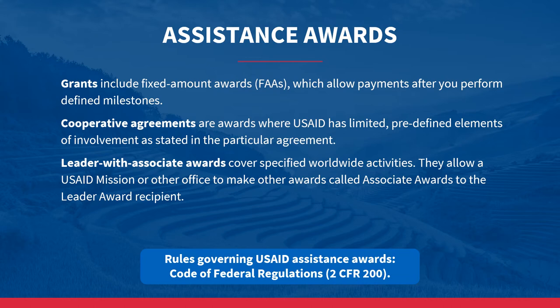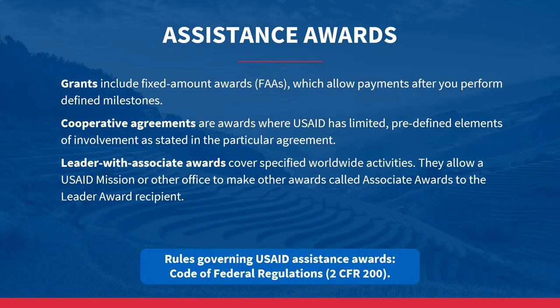According to USAID's Automated Directive System, or ADS, a leader with associate award involves the issuance of a leader award that covers a specified worldwide activity. The leader award includes language allowing a mission or other USAID office to make one or more separate associate awards to the leader award recipient, within the terms and scope of the program description and supporting a distinct local or regional activity. For definitions and rules governing grants and cooperative agreements, check 2 CFR 200.